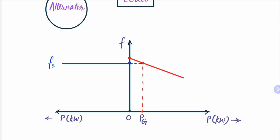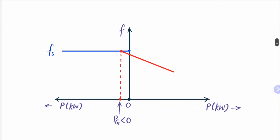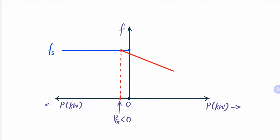The question comes: what if we keep the no-load frequency of this alternator slightly lesser than fs instead of slightly higher? In that case, the point of operation will be such that, since we cannot change the frequency of the infinite bus bar, the active power supplied by the alternator will be negative — it will start consuming active power from the infinite bus bar and behave like a motor. That is why we always keep the frequency of the incoming machine slightly higher than the infinite bus bar frequency.